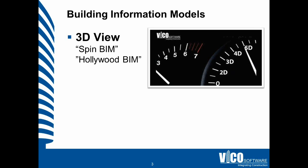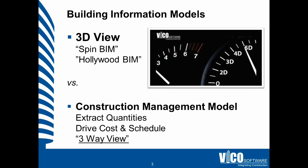So 3D view — the model created for visualization purposes is what we also call Hollywood BIM or spin BIM: a nice picture that you can spin around on the screen and present the design with. Now there is a difference between that and a model you create for construction management purposes. That model you create to extract quantities per location and use that to drive the cost plan and schedule plan, and then later the production control. That is not a 3D view, but we like to call that a three-way view.